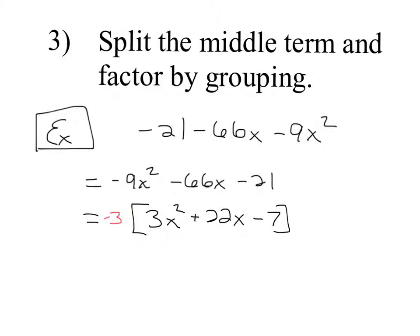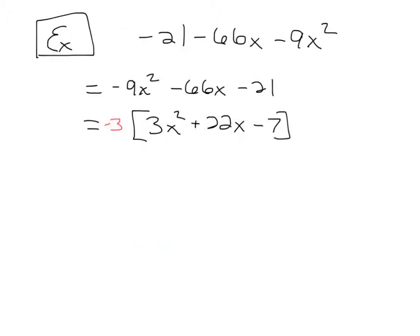Before we actually do splitting the middle term, let's discuss why we want to split the middle term. Yesterday, we learned how to factor by grouping, and to group you had to have an even number of terms. We have an odd number of terms because we have 3. So our goal is to make the equation like the equations from factoring by grouping, which is 4 terms, because we know how to factor if we have 4 terms.